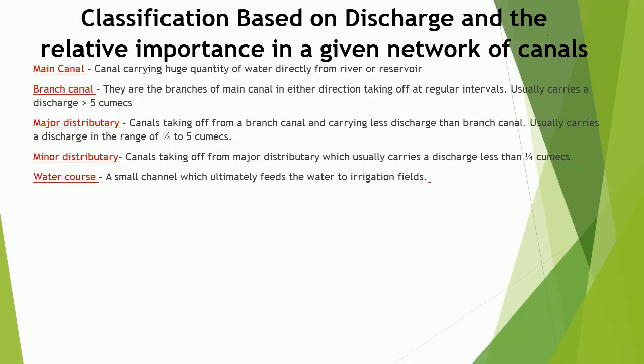Based on discharge and relative importance in a given network, canals are classified into five types: main canal — carrying huge quantity of water directly from river or reservoir; branch canal — branches of main canal taking off at regular intervals, usually carrying a discharge greater than 5 cumecs; major distributory — taking off from a branch canal, carrying discharge in the range of 0.25 to 5 cumecs; minor distributory — taking off from major distributory, usually carrying less than 0.25 cumecs; and water course — a small channel which ultimately feeds water to irrigation fields.